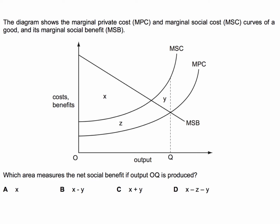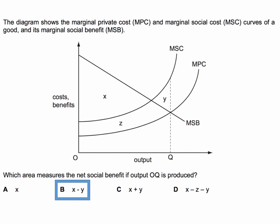So what did you put for this question? The net social benefit of output OQ is B, X minus Y. Let's think about it from the point of view of accumulating social benefit. Social benefit is accumulating, a bit like profit or welfare, as long as the social benefit at the margin is greater than the social cost.